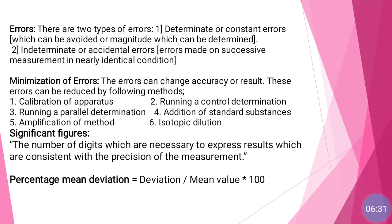Amplification of method can also reduce errors. Operative errors occur due to wrong procedures. For example, suppose you are in the lab doing a practical and you go to get a reagent, and your practical partner adds the wrong reagent to the test tube — that result comes out wrong. That is an operative error, which is not your mistake.